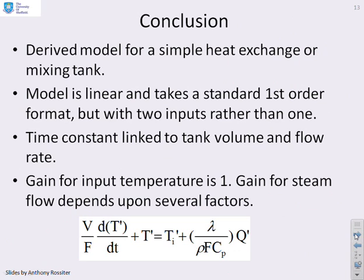In conclusion, I've derived a model for a simple heat exchanger or a stirred mixing tank. The model is linear and takes a standard first order format, but with the subtle variation that there are two inputs rather than one. The time constant is linked to the volume of the tank and the flow rate through the tank, which is intuitively what you would expect. The gain for the inlet temperature is 1 — again, what you would expect — whereas the gain for the steam flow depends on a number of factors: the latent heat of the steam, the flow rate of the fluid going through the tank, and the specific heat of the fluid going through the tank.